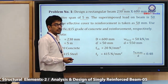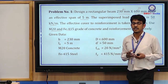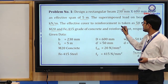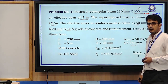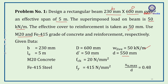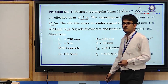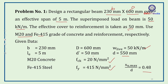Writing the given data: b = 230 mm, overall depth D = 600 mm, d' = 50 mm, so effective depth d = D − d' = 550 mm. Live load = 50 kN/m, effective span = 5 m. fck = 20 N/mm² (M20), fy = 415 N/mm² (Fe415), and xu,max/d = 0.48 (from IS 456, page 70).